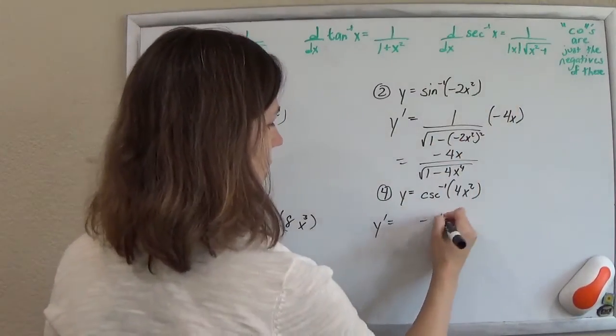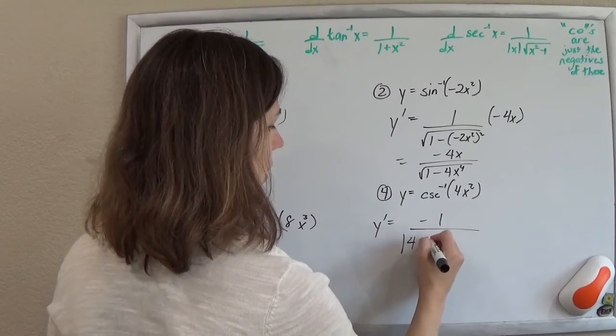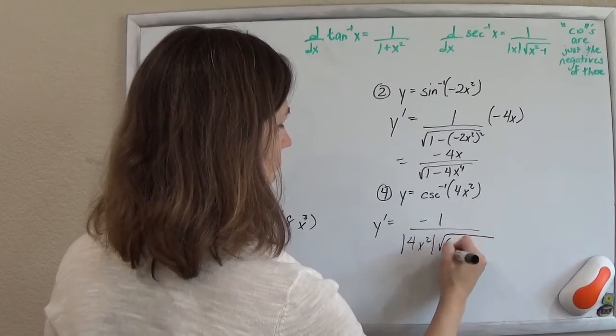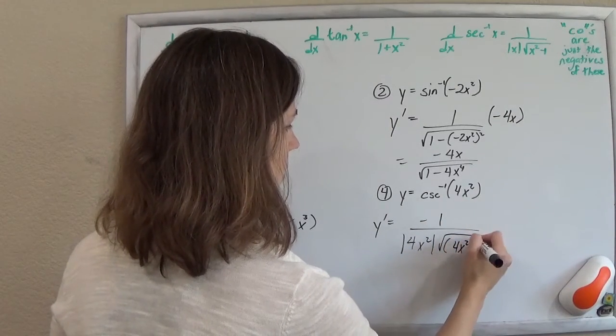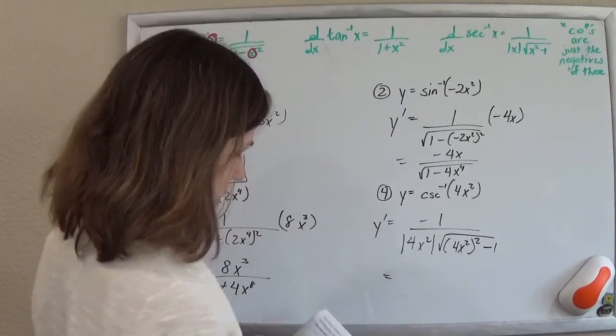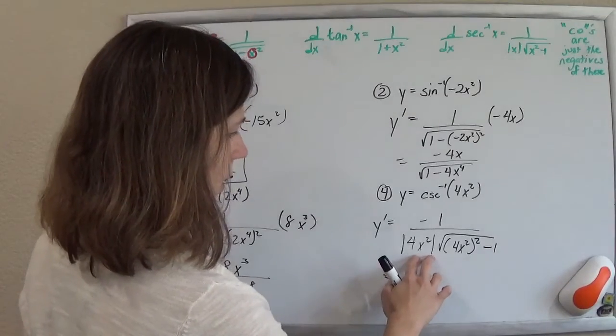So cosecant will be the negative of this one. Negative 1 over the absolute value of 4x squared times the square root of 4x squared squared minus 1. So I'm wondering, did they bother? Yeah. You can drop the absolute value here. Oh, sorry.